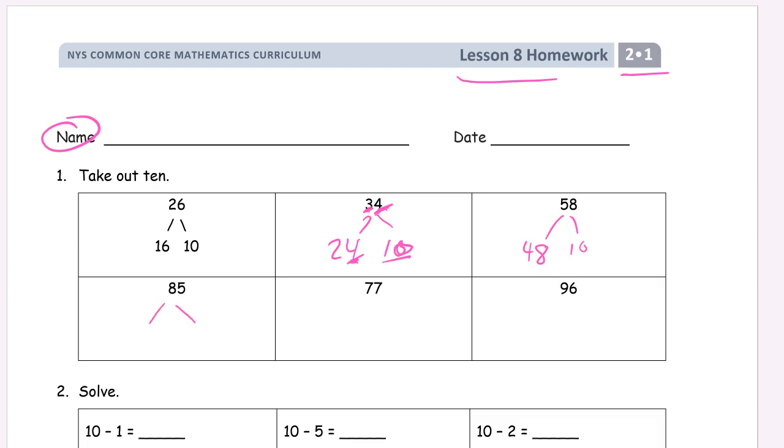58 is 48 and 10. 85 is 75 and 10. 77 is 67 and 10. 96 is 86 and 10.